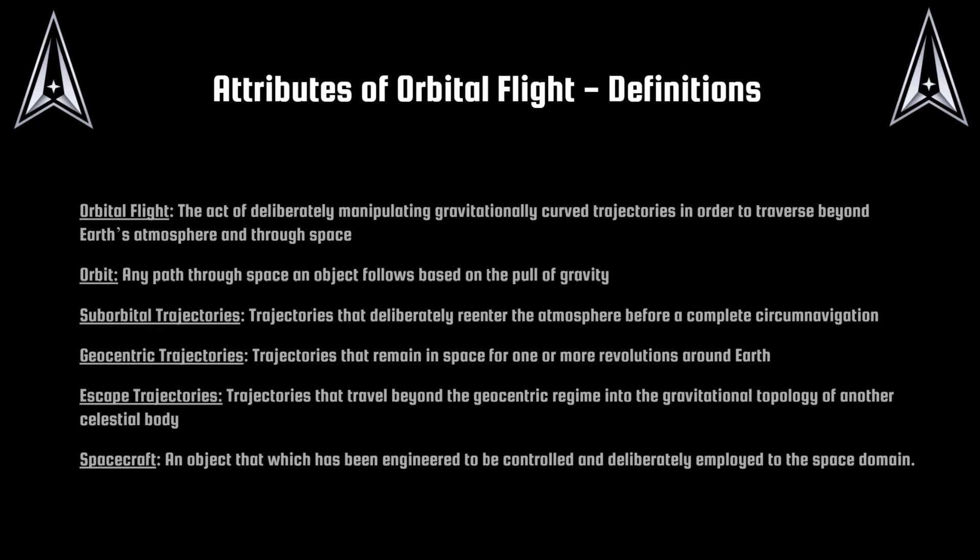The International Space Station is currently in orbital flight and following an orbit. Suborbital trajectories are defined as trajectories that deliberately re-enter the Earth's atmosphere before a complete circumnavigation. This would largely apply to ballistic missiles, which briefly enter the space domain and fall back down to Earth to reach a location extremely far from their launching point.